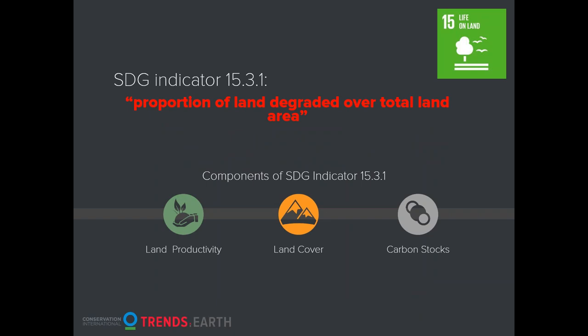The idea is that you're going to use Trans.Earth, which already comes with pre-populated global datasets on land productivity and NDVI datasets going all the way back to 1981, and land cover datasets. We provide a default ESA CCI land cover product that goes back to 1992 and is calculated annually, and then soil organic carbon. We follow good practice guidance developed by the UNCCD to create sub-indicators and integrate them into SDG 15.3.1, which is the proportion of land degraded over total land area.